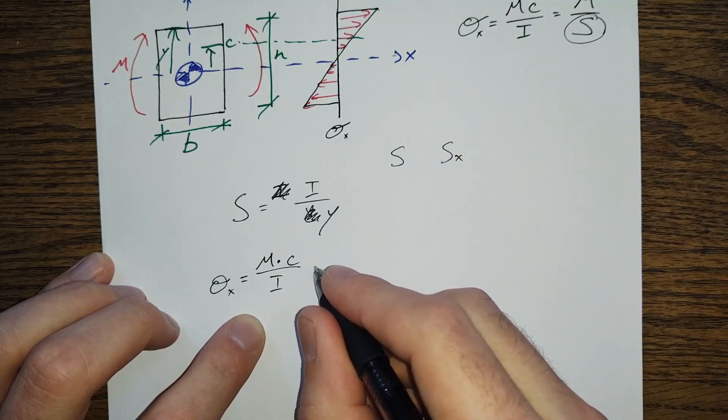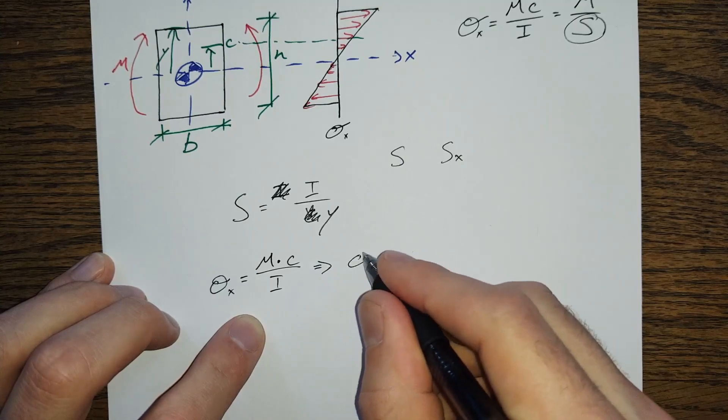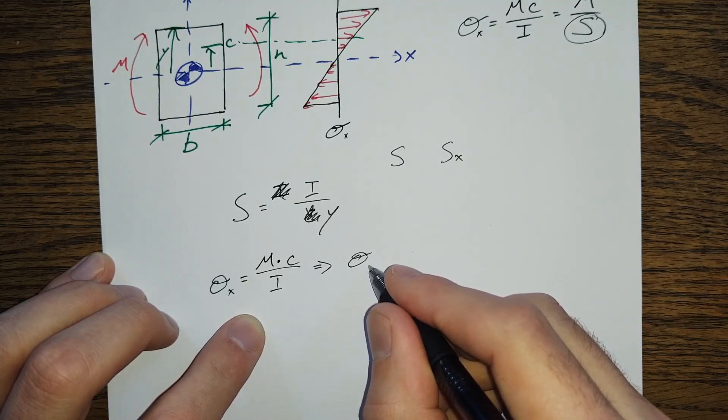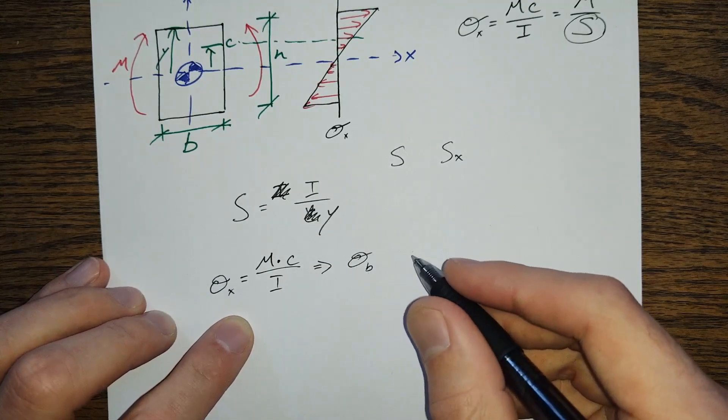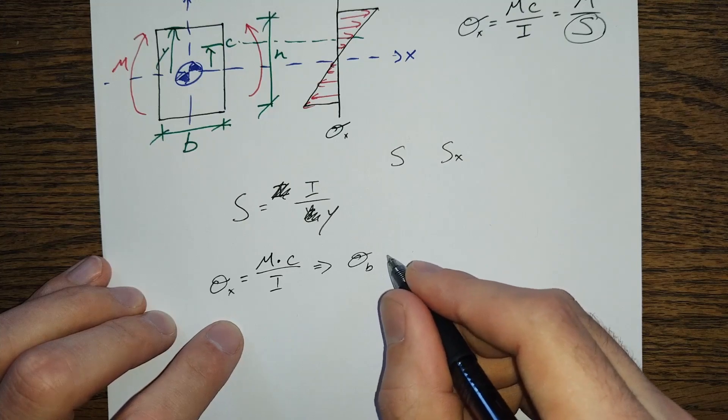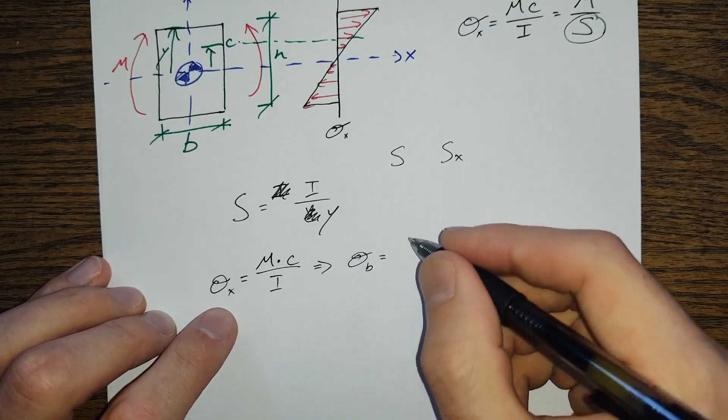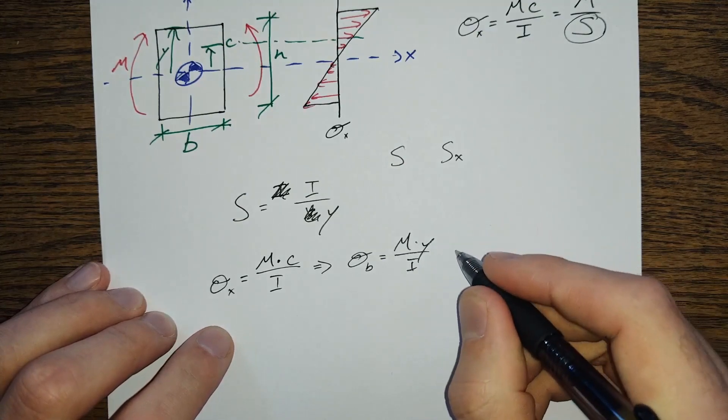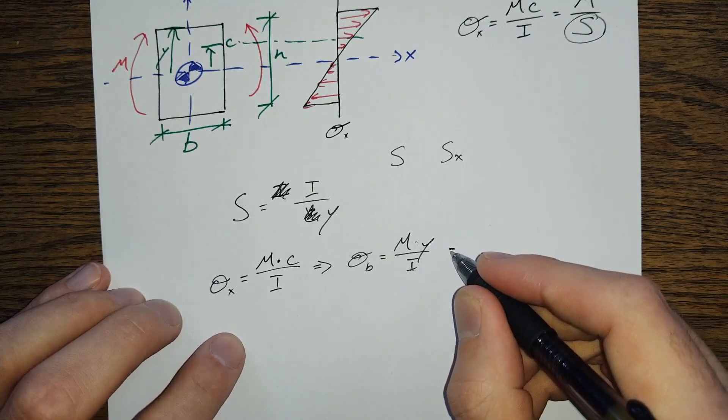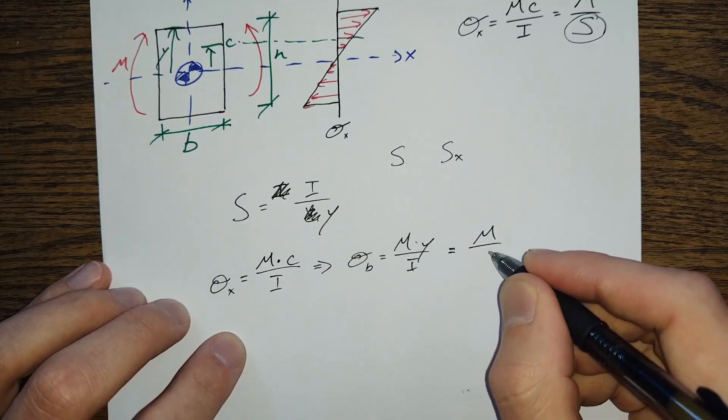Times the distance up to the fiber that we're interested in, divided by the moment of inertia. And if we are looking for the extreme stress, or the ultimate fiber stress there, sometimes this is denoted as sigma B or sigma F, we're going to then be looking at M Y over I, which can be rewritten as M over S.